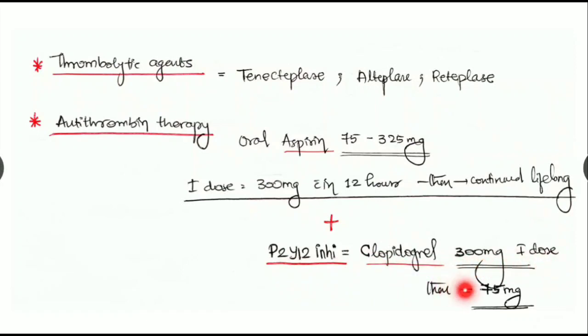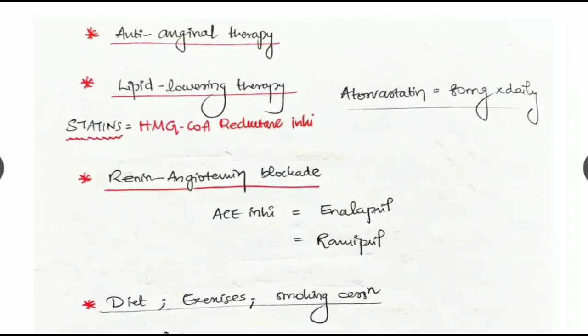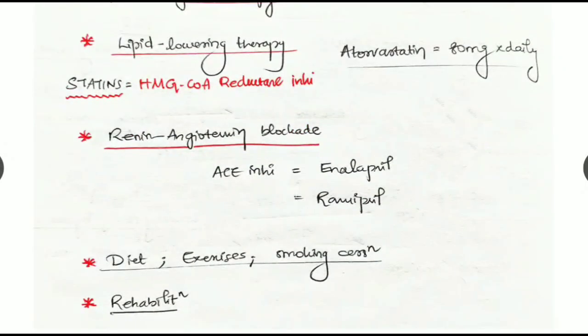We have to give some anti-anginal therapy like glyceryl trinitrate or isosorbide nitrate. We have to give lipid lowering therapy like statins which are HMG CoA reductase inhibitors. The mostly used one is atorvastatin continued daily. The renin angiotensin blockade is a must. Mostly used are ACE inhibitors like enalapril, ramipril, etc., and also ARBs. Suggest a good diet and exercises, and cessation of smoking is a must.